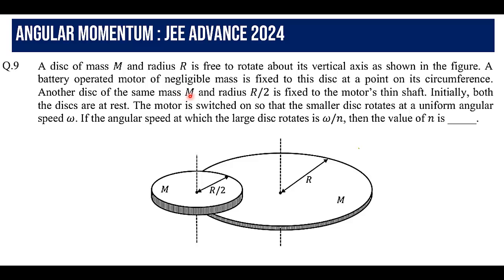Another disc of the same mass m and radius r/2 is fixed to the motor's thin shaft. The motor has a shaft, and on this shaft we have another disc. This disc has the same mass m but radius r/2, and it can rotate about this shaft, which is the vertical axis. Initially both discs are at rest, so omega equals 0 for both.